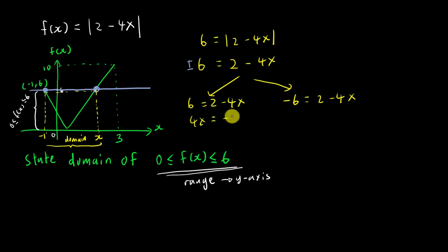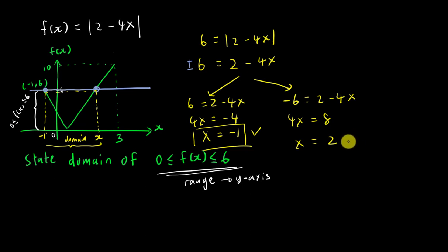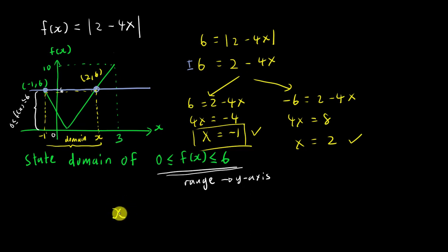Solving the first equation: 4x = −4, so x = −1. Solving the second equation: 4x = 8, so x = 2. We already knew that when y = 6, x = −1 from the given coordinate. So the new value we focus on is x = 2. Therefore, that intersection coordinate is (2, 6).